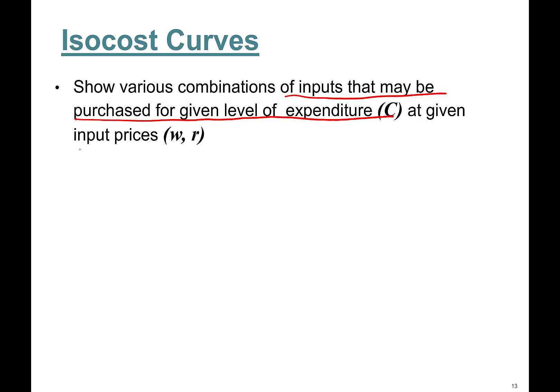C at given input prices. So basically, if you remember, labor—the cost per unit of labor was the wage rate. Cost per unit of capital is the rental rate. So the total cost is w times number of workers plus rental rate times number of capital employed.